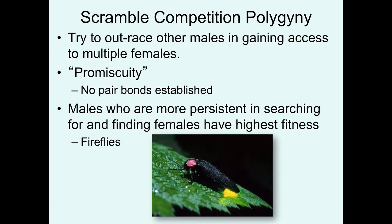In scramble competition polygyny, males race to outcompete other males in gaining access to multiple females. Males that find and mate with the majority of females have the highest relative fitness. Since there are no social pair bonds, some prefer to call this promiscuity. Traits leading to higher success include persistence in searching for females — like fireflies where the most active males flashing and flying around gain the highest relative fitness.